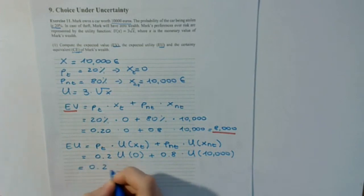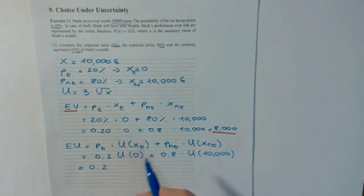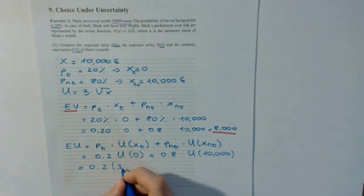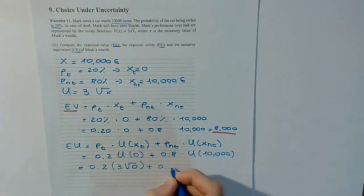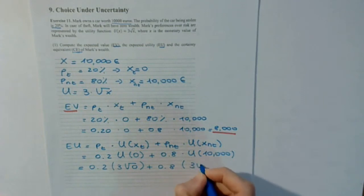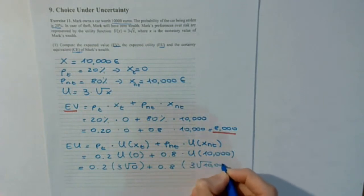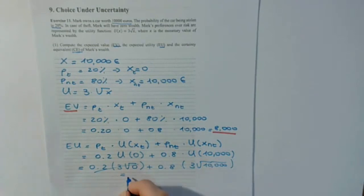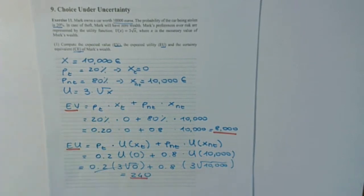Substituting into the utility function: 0.2 times 3 times the square root of 0, plus 0.8 times 3 times the square root of 10,000. The first term is zero, so we end up with only the second part, which equals 240. The expected utility is 240.